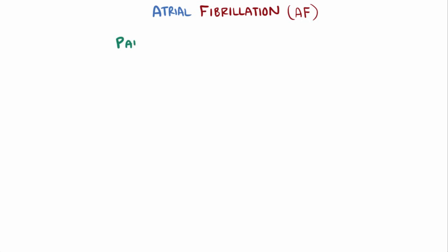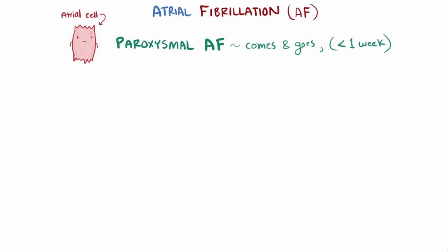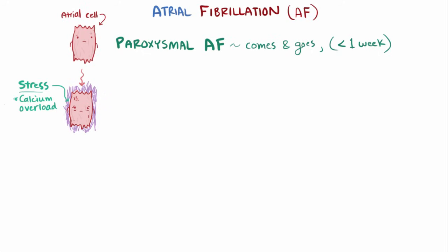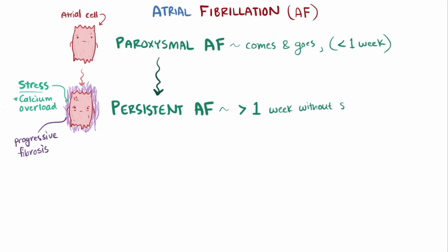Oftentimes people with AF start with what are called paroxysmal events, which means AF suddenly comes and goes, lasting less than a week at a time, probably because the tissue is still relatively healthy. Repeated paroxysmal events that occur over longer periods of time tend to stress the atrial cells even more. There are probably a number of mechanisms explaining how a burst of rapid beats from one of these paroxysmal events leads to stress, but one potential mechanism is through calcium overload. Over time, the cells in the atrium seem to undergo progressive fibrosis or scarring from this stress. When this happens, the AF episode isn't able to spontaneously terminate, and patients have persistent AF, defined as lasting more than a week without self-terminating.